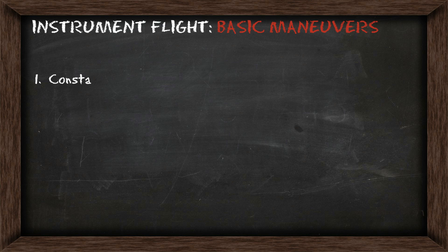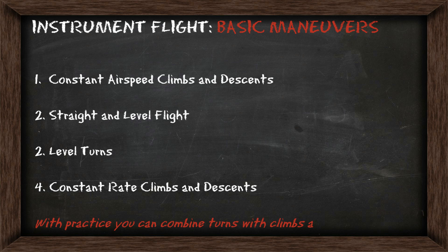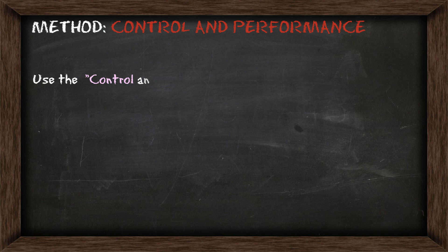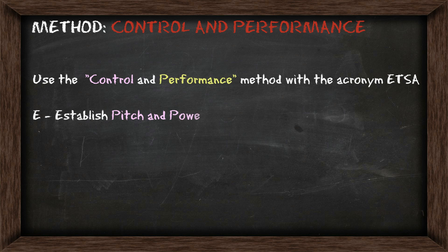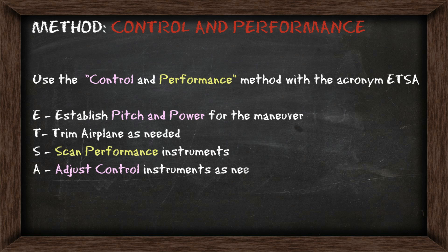There are four basic maneuvers in instrument flight: constant airspeed climbs and descents, straight and level flight, level turns, and constant rate climbs and descents. With practice, you can combine your climbs and descents with a turn. Going back to the control and performance method, we want to use the acronym ETSA: establish the pitch and power for the maneuver, trim the airplane as needed, then scan your performance instruments to check you're getting the performance you want, and then make adjustments to your control instruments as needed.